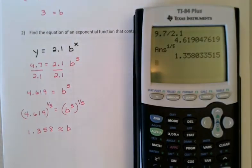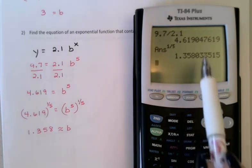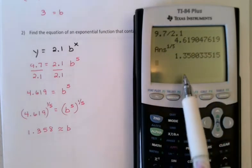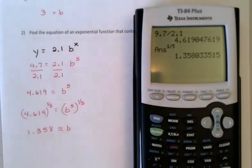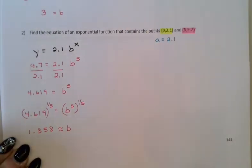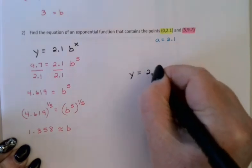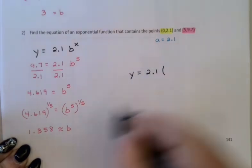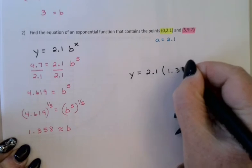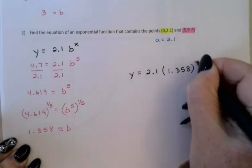When you do problems like this in MyMathLab, they will often give directions like, you know, don't round off at the intermediate steps. Round the final answer off to however many decimal places they want. This is what they mean. Keep the whole thing in the calculator and round off at the end. Alright, so I now know my function. y equals 2.1 times my base, 1.358 to the x power.